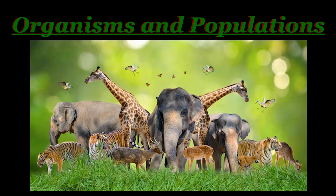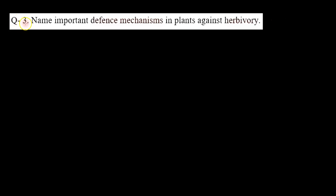Hello everyone, so we are solving NCERT questions of the chapter 'Organisms and Populations'. Question number 3 is: name important defense mechanisms in plants against herbivory. Is question mein hameh plants ke defense mechanisms batane hain, jo unhone develop kare hain against herbivorous animals. So let's check the answer.